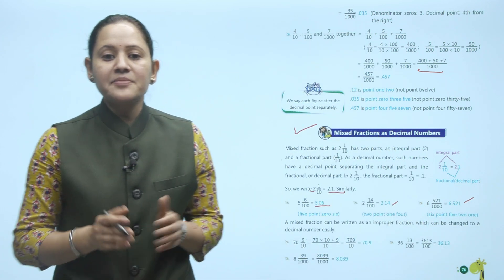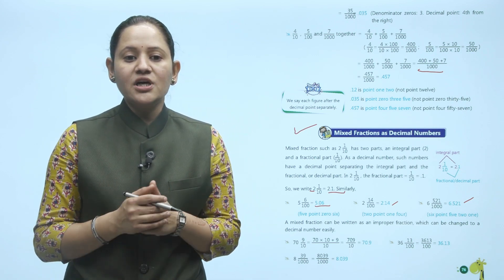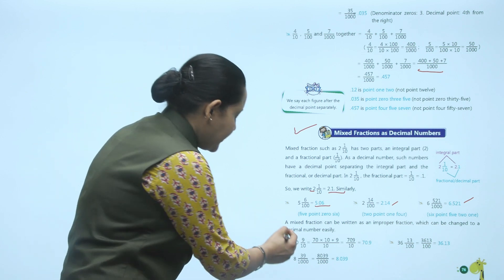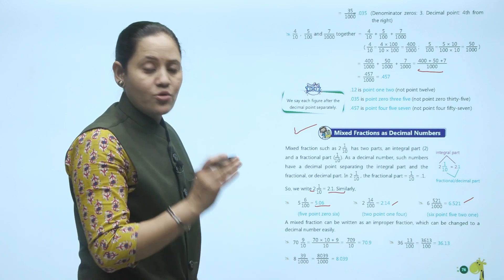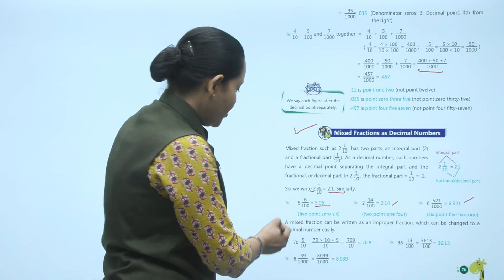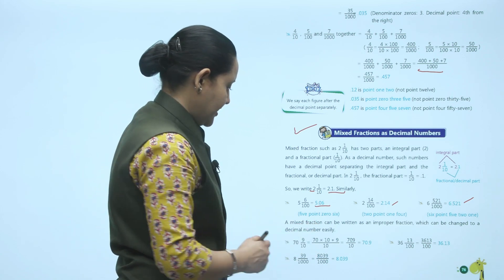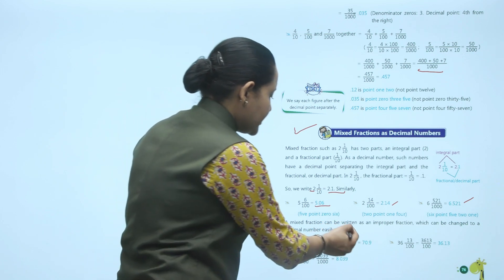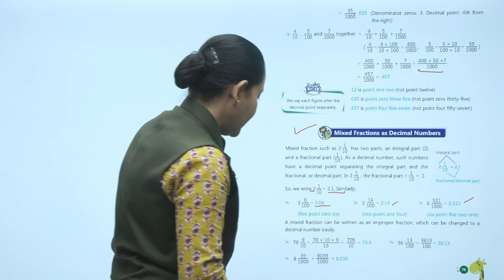A mixed fraction can also be written as an improper fraction and then converted to a decimal. For example, 79 upon 10: the whole part is 7 (since 70 divided by 10 equals 7), and 9 upon 10 is the fraction part. We can write 7 times 10 plus 9 upon 10, which gives 709 upon 10, that is 70.9.